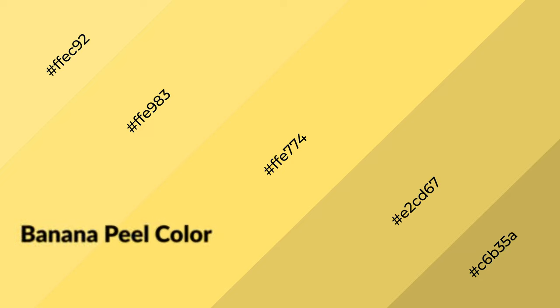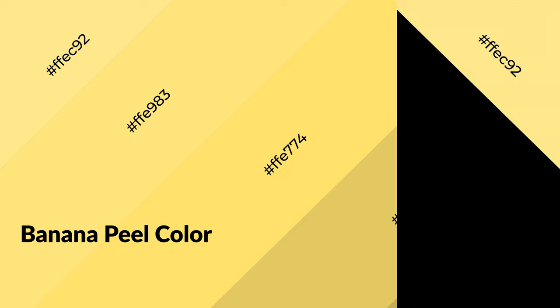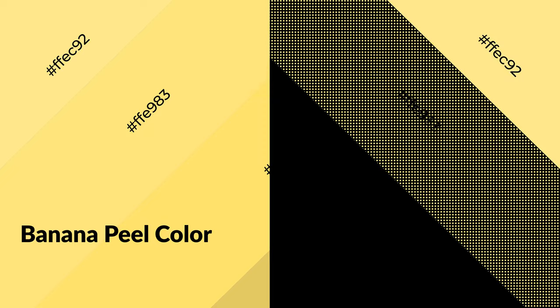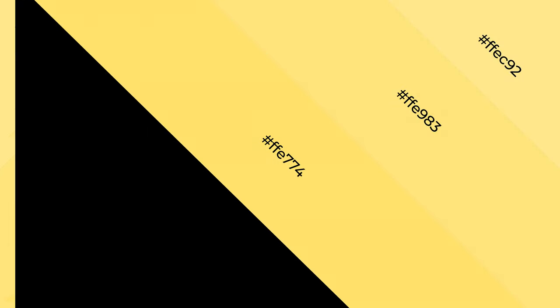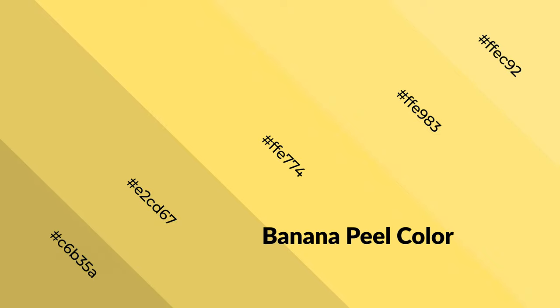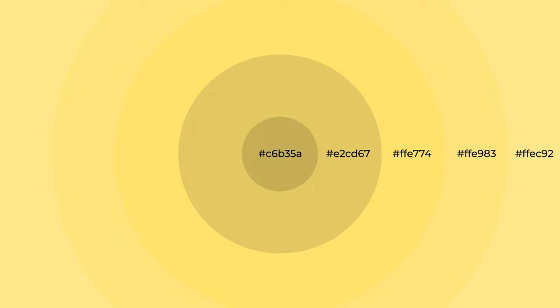Banana peel is a warm color and it emits cozier and active emotions. Warm colors are symbols of warmth, fire, heat, and sunshine. It also evokes joy, passion, love, and even anger. You can see them used in restaurants and gyms.